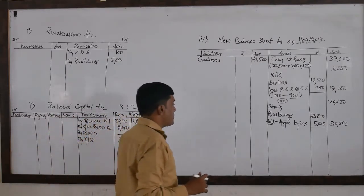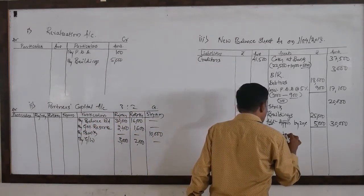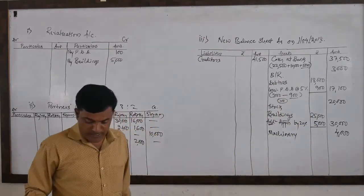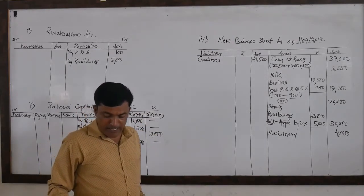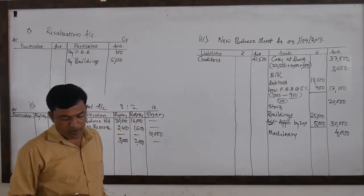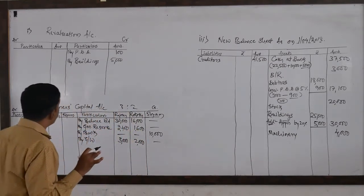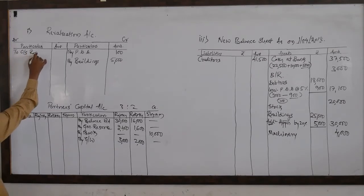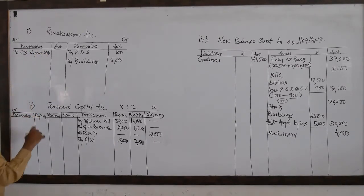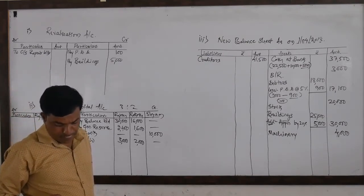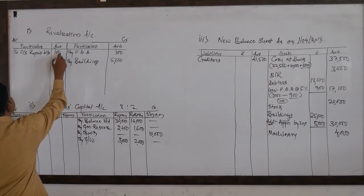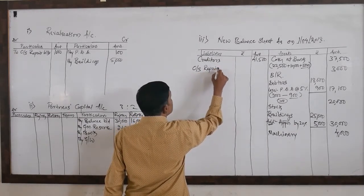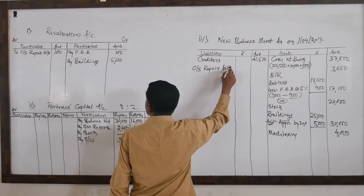Machinery: 4,000 — no adjustment for machinery, written at 4,000. Now for the last adjustment: provide for outstanding repair bills of rupees 1,000. This is an independent adjustment. To outstanding repair bills of rupees 1,000, we need to write it on the liability side of the new balance sheet as 'Outstanding Repair Bills: 1,000.'